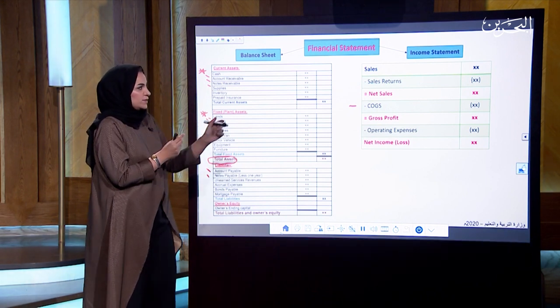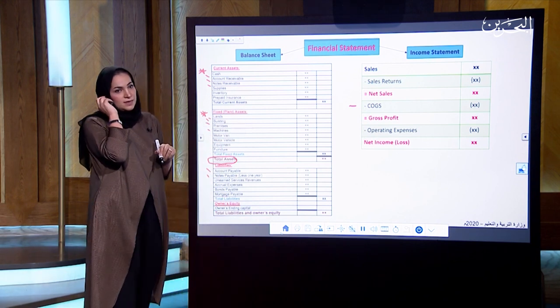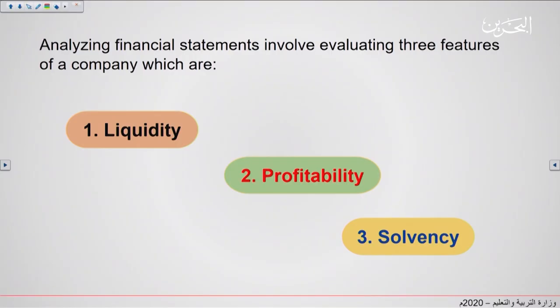You already studied this in Accounting 212 for level 3. When analyzing financial statements, we evaluate three features: liquidity, profitability, and solvency.